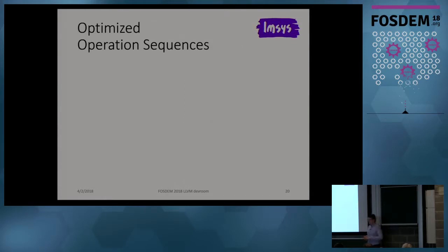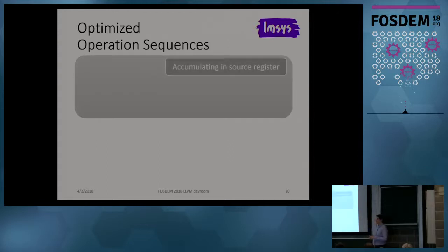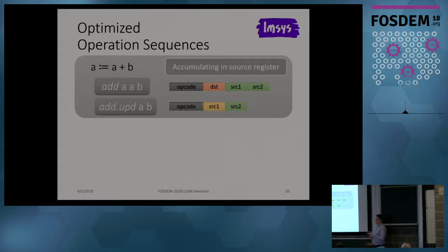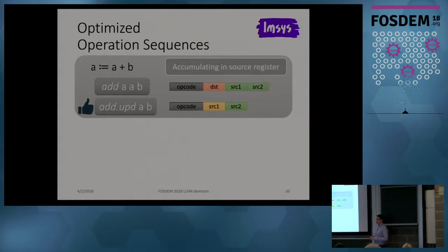For optimizing operation sequences, consider accumulating in source registers. Take the simple addition A equals A plus B. In a regular instruction form, you write add A, A, B — so add A and B and store the result in A. This means you have an opcode, a destination register, and two source registers. But the destination and one source register are the same, so why store it twice? We can have a special in-place update variant: add-update A, B, where the result is stored back to the first source register. This saves one argument in the binary representation, and since this kind of in-place update is common, we can save a considerable amount of program memory.